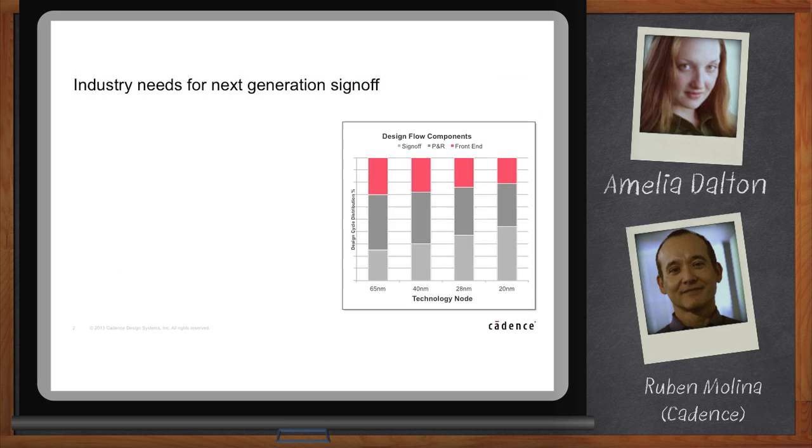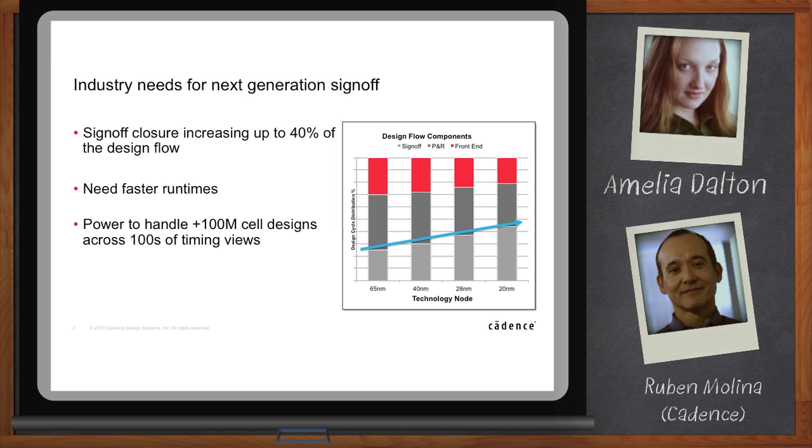Okay, well, starting at the older technology node, the sign-off closure problem really wasn't a big issue because in terms of the number of timing views that needed to be analyzed, maybe one or two, and design sizes weren't that big, so there weren't a lot of modes to analyze. And the design sizes were pretty small as well. So, when you got to timing sign-off, pretty much it was one or two analyses, and then you were pretty much done. But now we're moving to 20 nanometer, and design sizes are a lot larger. Runtimes are taking hours, if not days. The overall sign-off closure phase is now pushing about 40% of the overall design cycle, and that's actually becoming the biggest bottleneck in trying to tape out a design. So, it's becoming a big problem. And the industry really is needing solutions in that space to sort of shrink that sign-off closure phase.